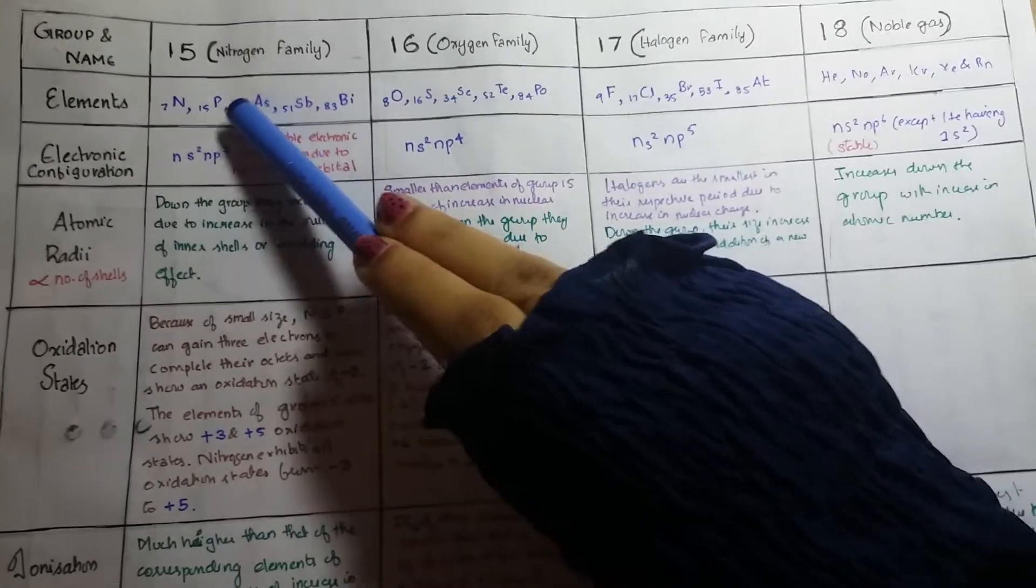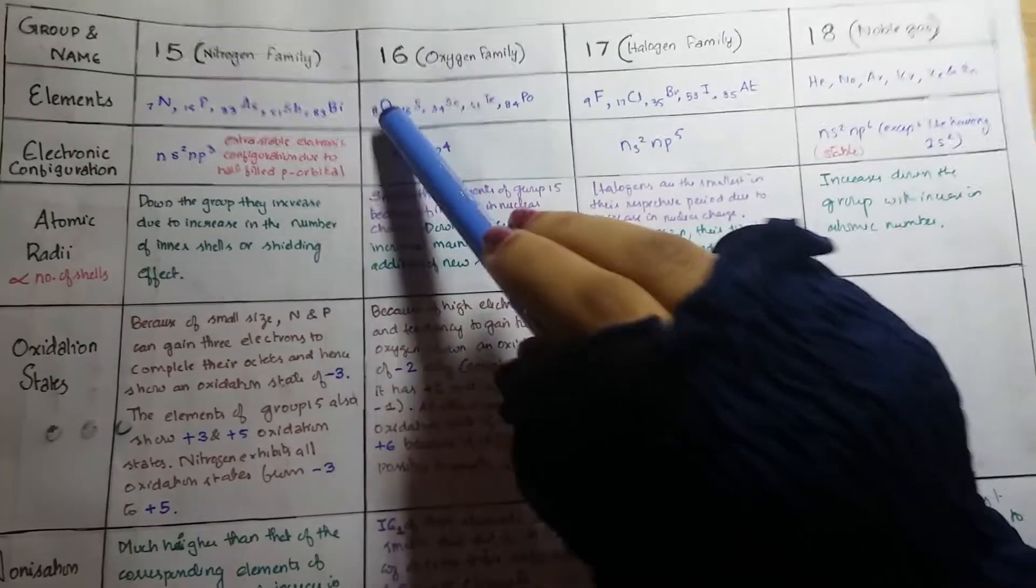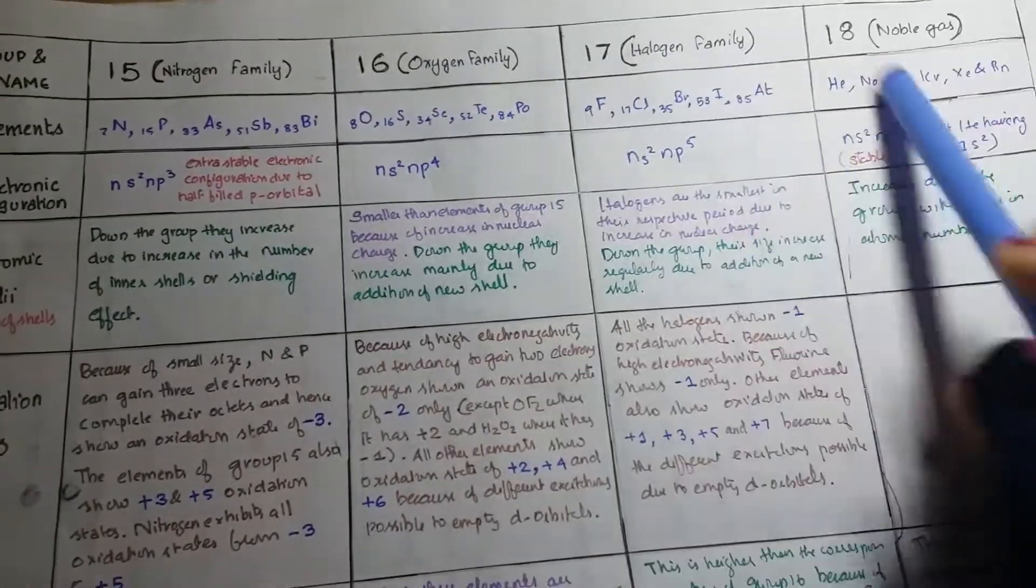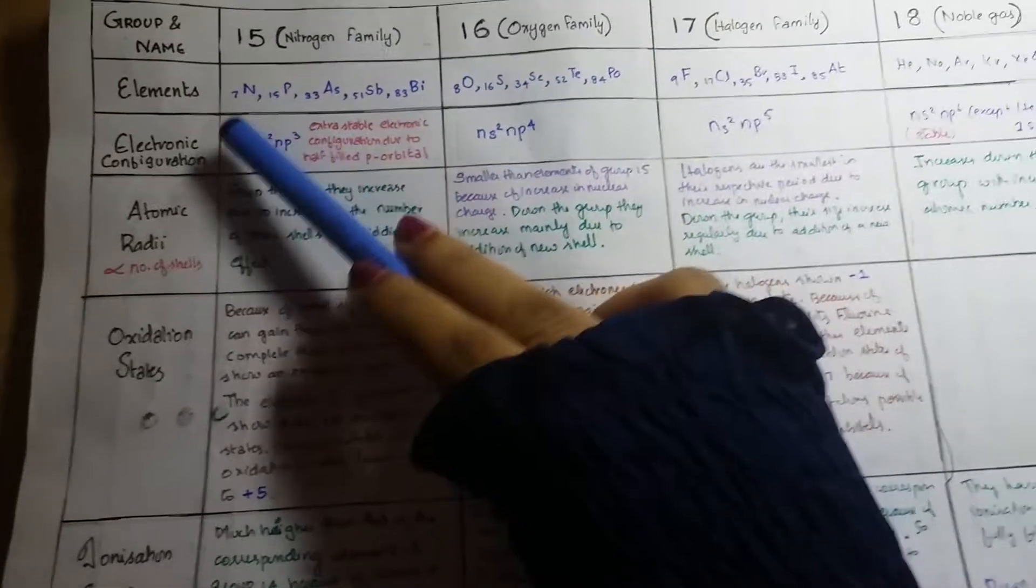In group 15 we have nitrogen, phosphorus, arsenic, antimony, bismuth. In group 16 we have oxygen, sulfur, selenium, tellurium, polonium. And such - all this we all know, all these things right? So next we have to know the electronic configuration.